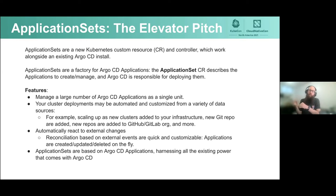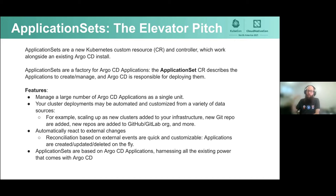You specify the template, the generator, and then the Application Set controller automatically outputs a bunch of applications that meet your specific specifications. That lets you do some really neat things — say, if you've got Git repositories containing 50 applications that you want to deploy to 50 clusters, you can manage all of those deployment combinations using Argo CD applications within an Argo CD Application Set as a single unit.